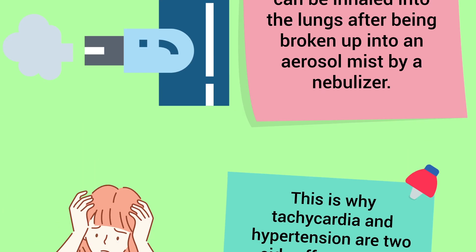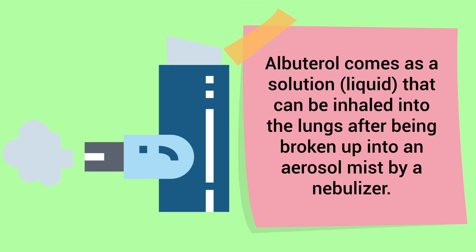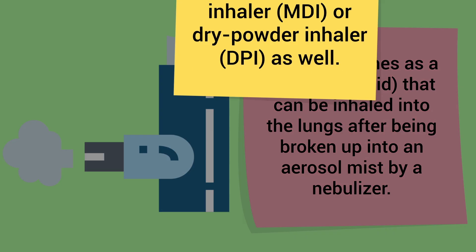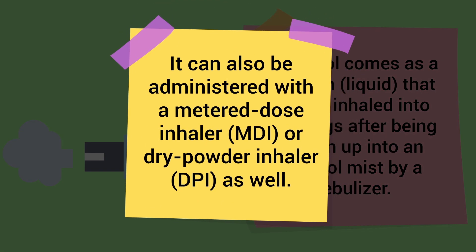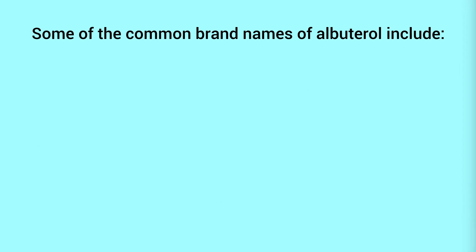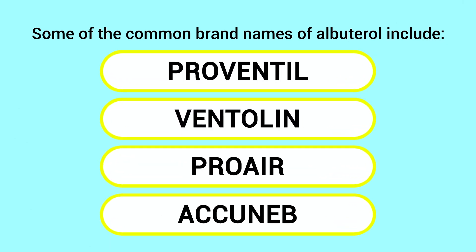Some other side effects include shakiness, tremors, and nervousness. Albuterol comes as a solution — a liquid that can be inhaled into the lungs after being broken up into an aerosol mist by a small volume nebulizer. It can also be administered with a metered dose inhaler or dry powder inhaler as well.